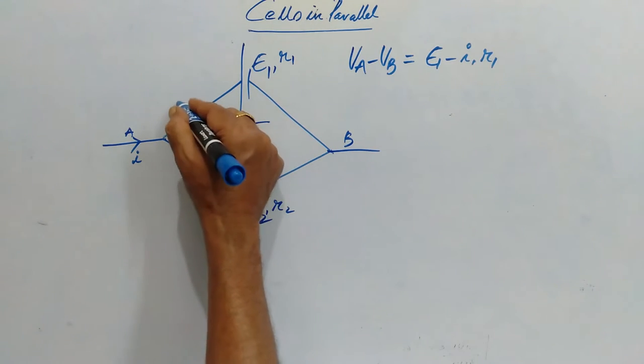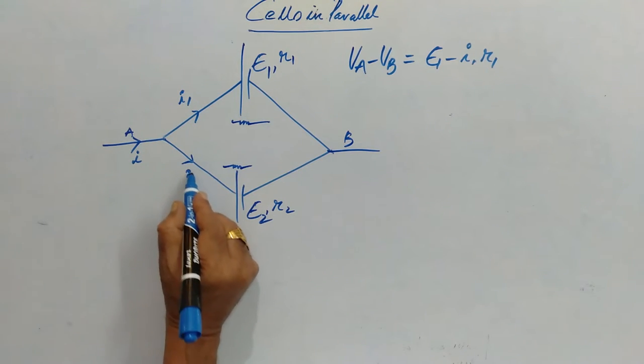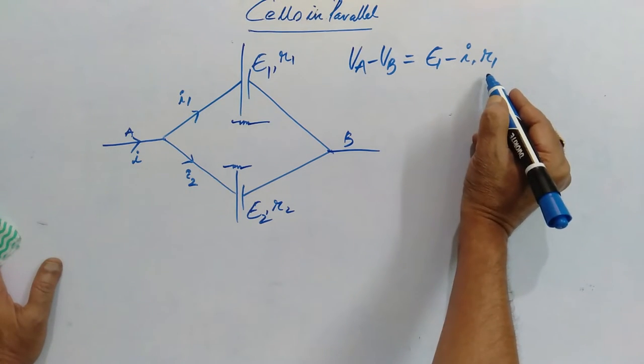it will be branchized. So, I1 current through cell E1 and I2 through E2. Now, this is one equation.